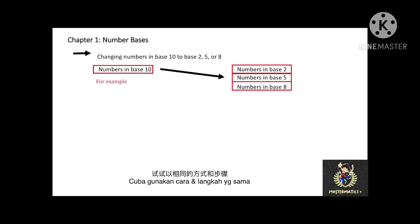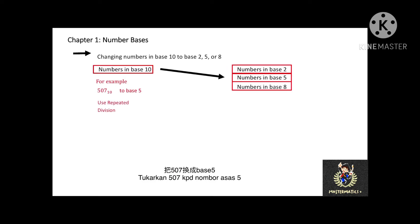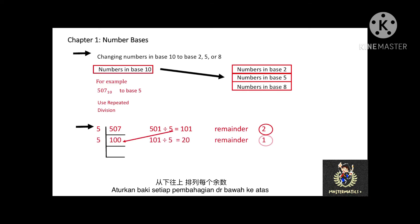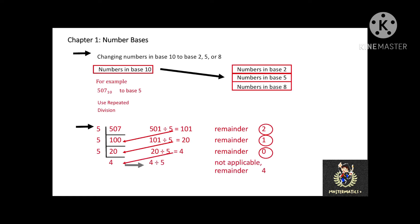Now, changing the number in base 10 to base 5. In this case, from 507 base 10 to base 5. You may use the same method as the previous example, but this time divide by 5 repeatedly because you are converting to base 5. List down the remainder from each division, then rearrange the remainders from bottom to top, and you will get 4012 base 5.